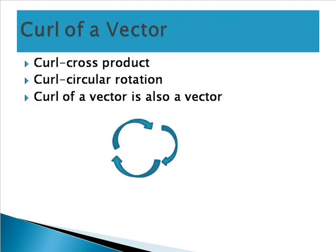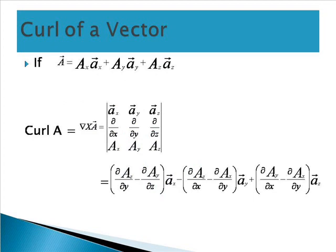Next we are going to see curl of a vector. Curl equals del cross A-vector. That is equal to the determinant with rows: [ax-vector, ay-vector, az-vector], [∂/∂x, ∂/∂y, ∂/∂z], and [Ax, Ay, Az]. We expand this determinant to get the value for curl.